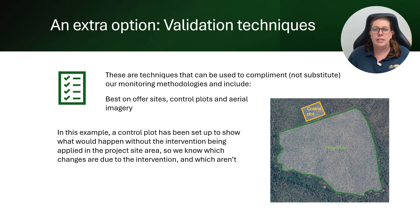In addition to the four considerations for robustness we've just covered, there's an additional option for helping to ensure your data is robust: validation techniques. These are particularly useful if you haven't been able to monitor as planned, or if you're trying something new and need additional data to support the outcome achieved. In this example, the project site is a grazing area implementing a new grazing regime. To show that changes in the landscape are due to the new grazing regime and not other factors such as rain, they've set up a control plot in an immediately adjacent paddock with all the same features — the same land type and starting condition. The monitoring data from the control plot can then be compared to the project site to identify changes that occurred only at the project site due to the new grazing regime.